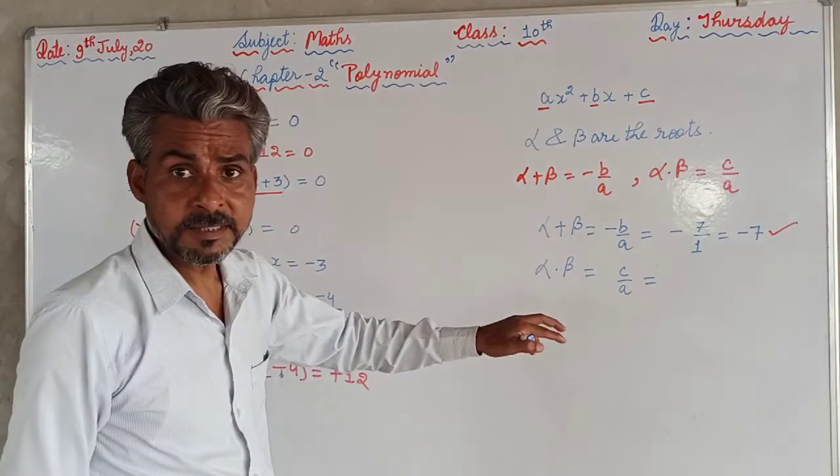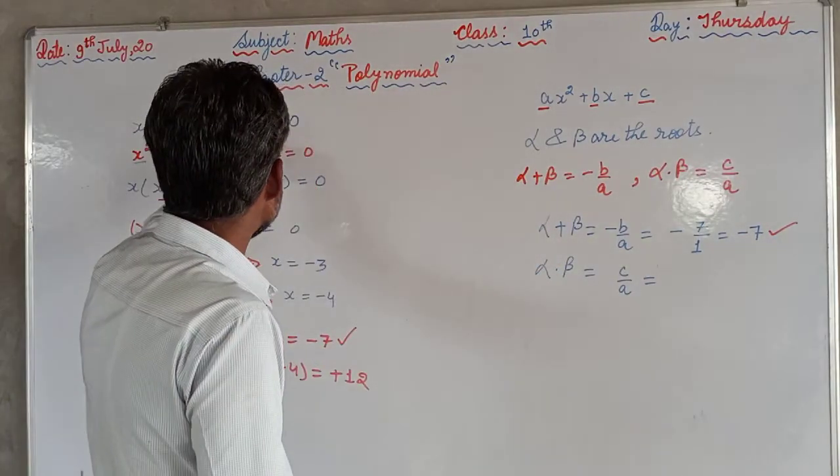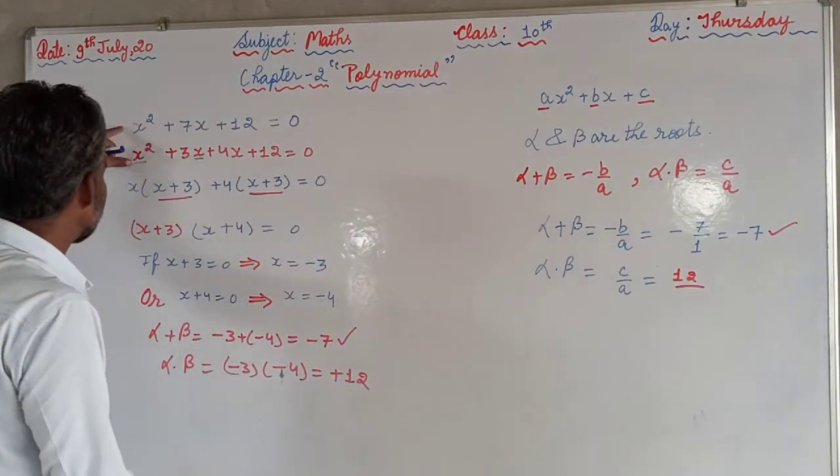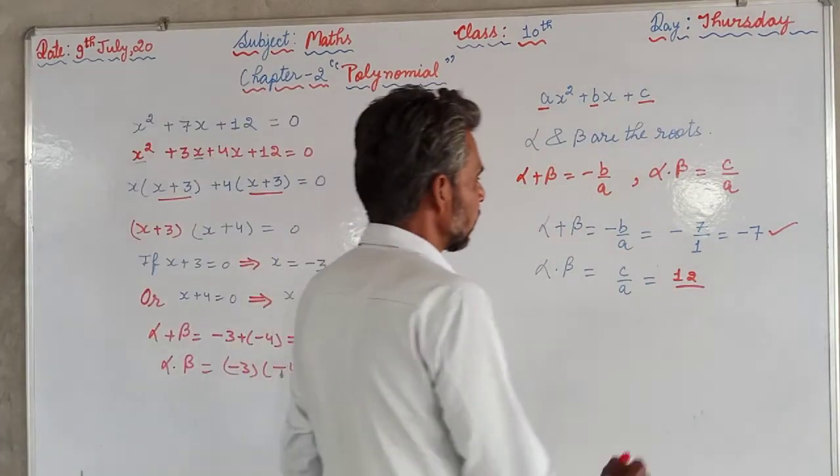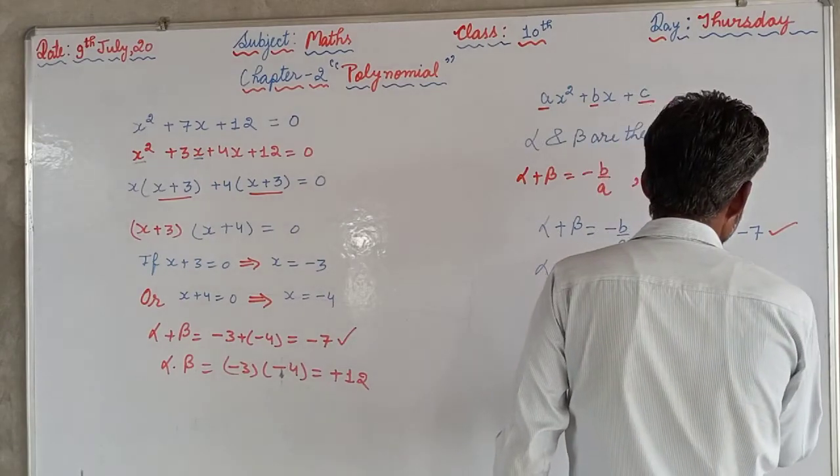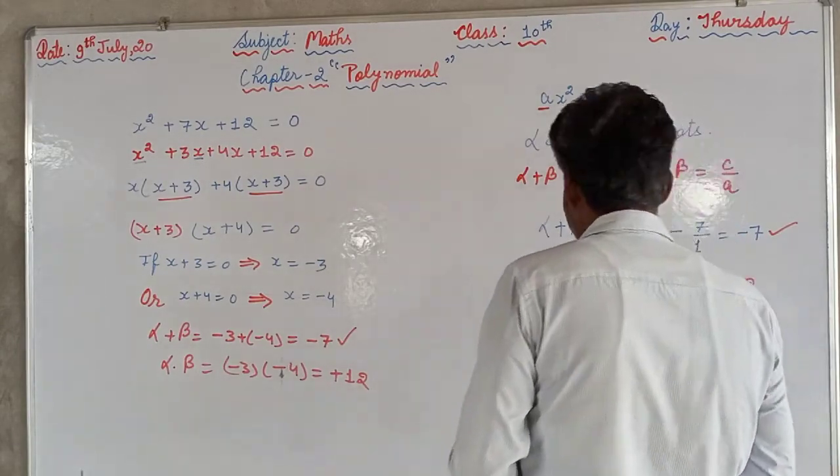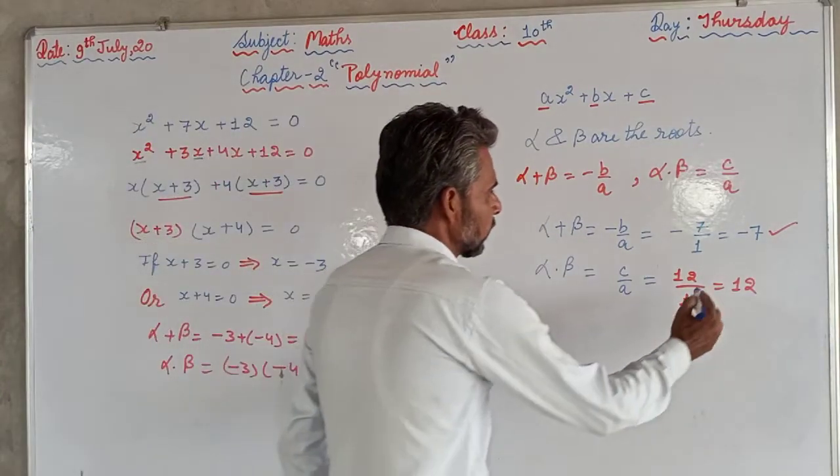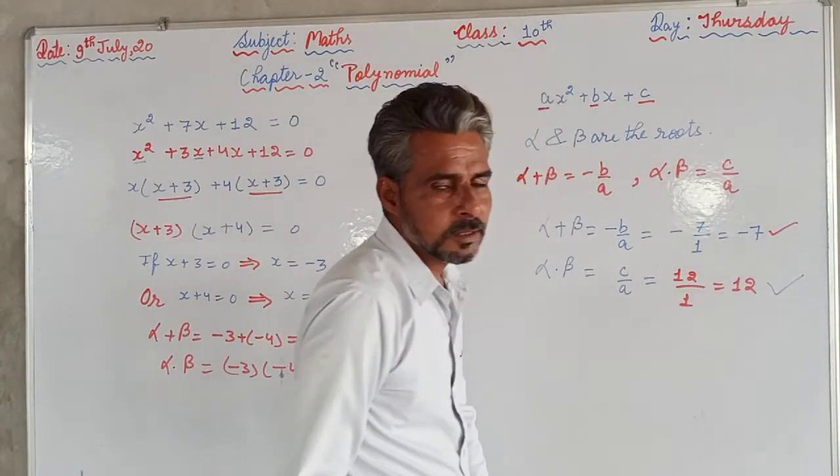So this is verified. What is the value of c? The value of c is 12. What is the value of a? The value of a is 1. So 12/1, that is 12. Again, that is verified. From here, αβ is +12. From here, αβ is +12.